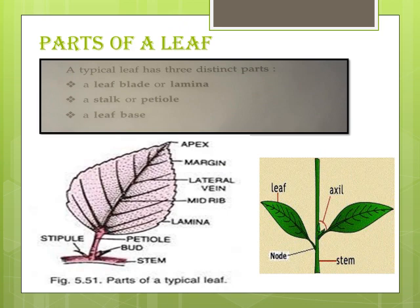Now we will deal with the parts of the leaf. A typical leaf has three distinct parts: the leaf blade or lamina, the stalk or petiole, and the leaf base. The leaf blade or lamina is the broad part of the leaf where the veins and midrib are all present. The stalk or petiole is the stalk by which the leaf is attached to the stem. The leaf base is the point at which the leaf is attached — that is, the node.